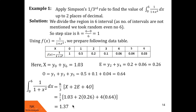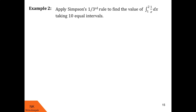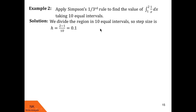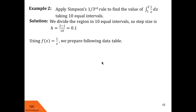Now let us see another example of similar type. Here we are asked to apply Simpson's one-third rule to find the value of the definite integral of 1/x dx over the limit 1 to 2, taking 10 equal intervals. So the number of intervals is 10, and step size will be (2−1)/10 = 0.1.